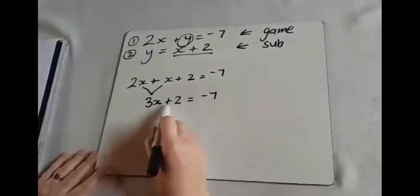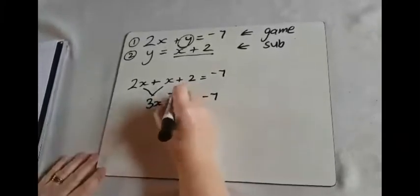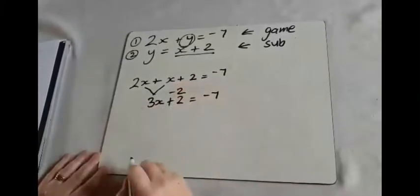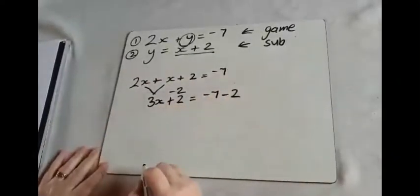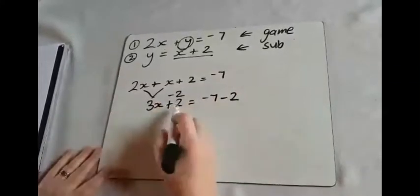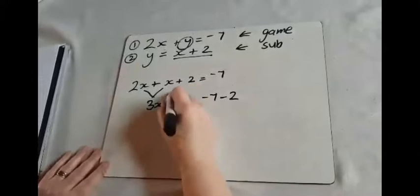So the first thing we need to do is get rid of this plus 2. So if we do that by taking away 2, and if we do it from this side of the equation, we have to do it to this side of the equation too. So if you've got add 2, take away 2, it cancels out.